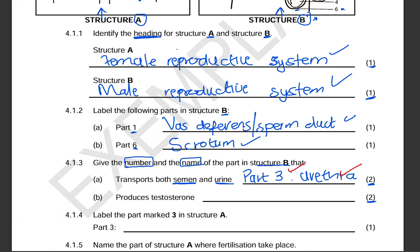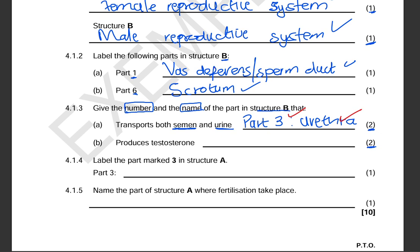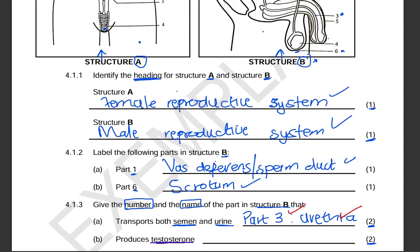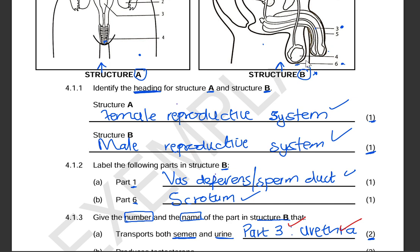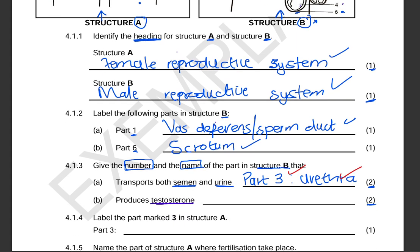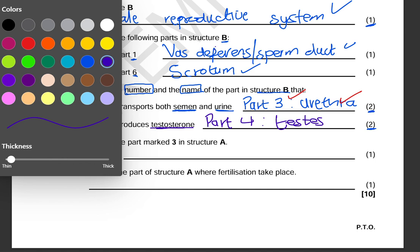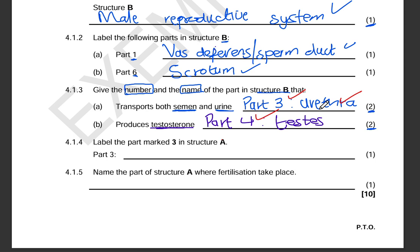We are also asked for the number and name of the part in structure B that produces testosterone. Testosterone is a male hormone, and it is produced by the testes. Looking at the labels, the testes is part number four. So the answer is part four — testes. These two parts of the answer are marked independently: the number and the name.